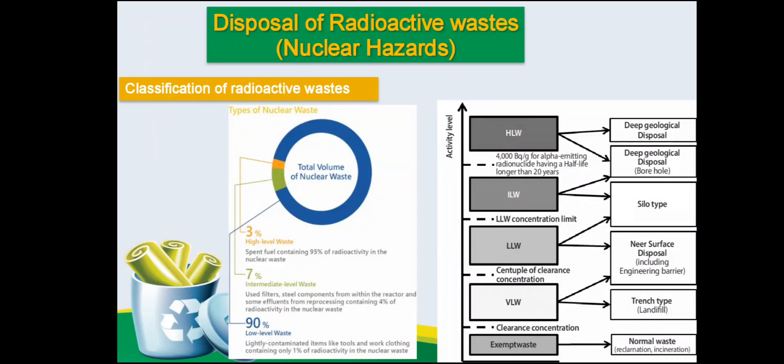Now we are going to see about the disposal of radioactive waste or nuclear waste. There are three types of radioactive waste: low level waste, which comprises 90%, intermediate or medium level waste at 7%, and high level waste at 3%. The low level waste consists of slightly contaminated objects like tools and clothing near the power plants — it contains 1% of the radioactivity. Steel components, filters and effluents from reprocessing units containing 4% of the radioactivity are intermediate or medium level waste. High level waste is spent fuels containing 95% of the radioactivity.